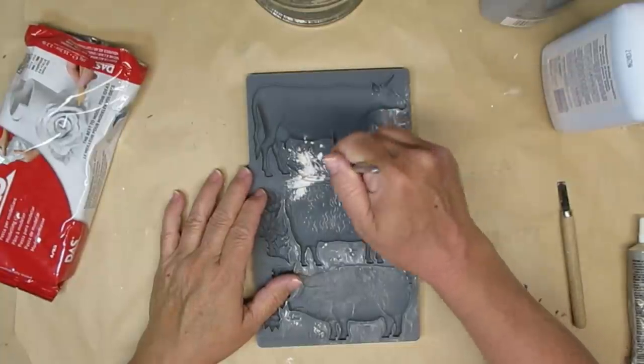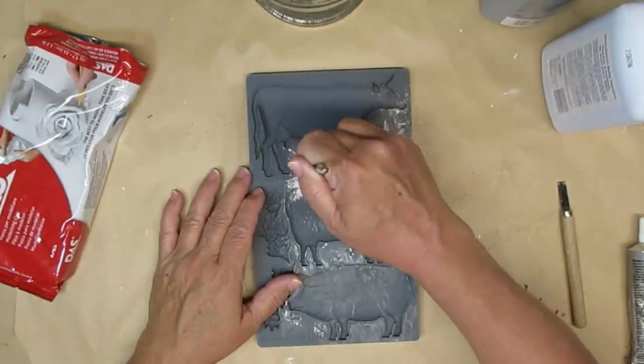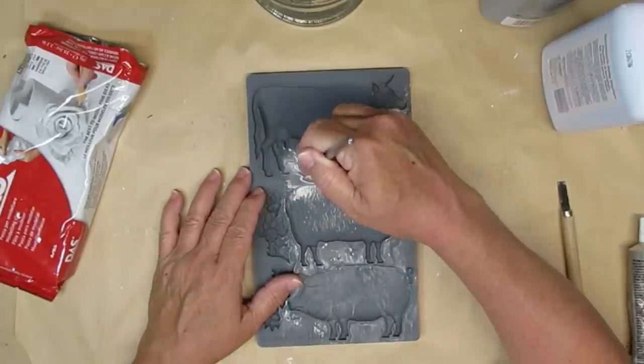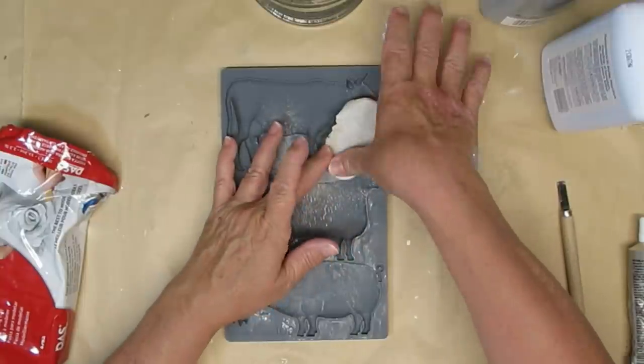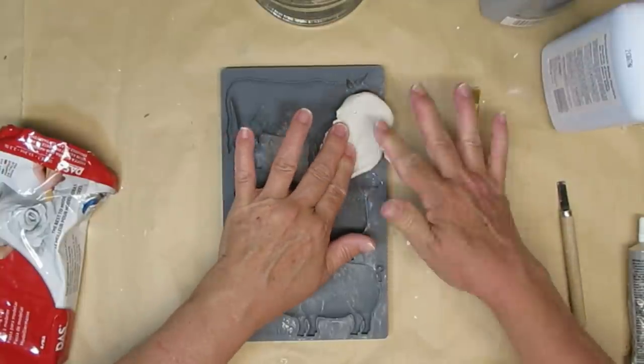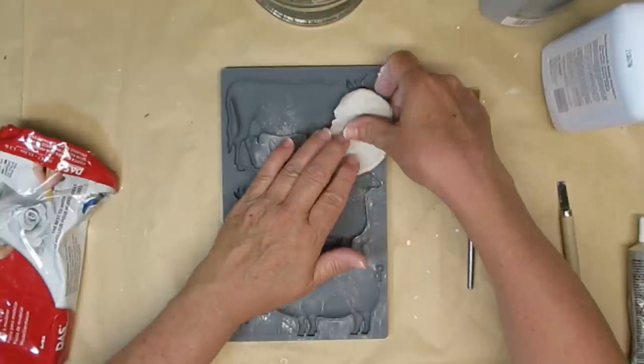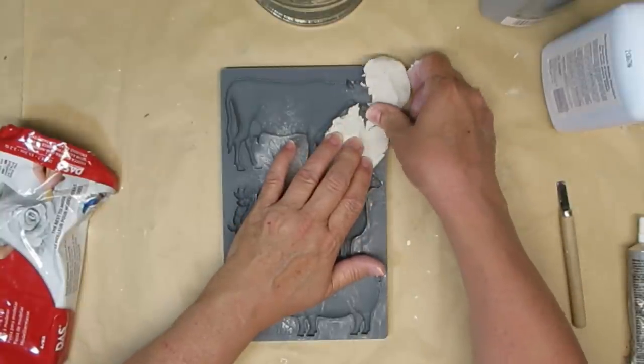Again, using the cornstarch to just make sure that everything is nice and coated and tapping off the excess. I'm going to go ahead and use the clay again and fit it into the mold.